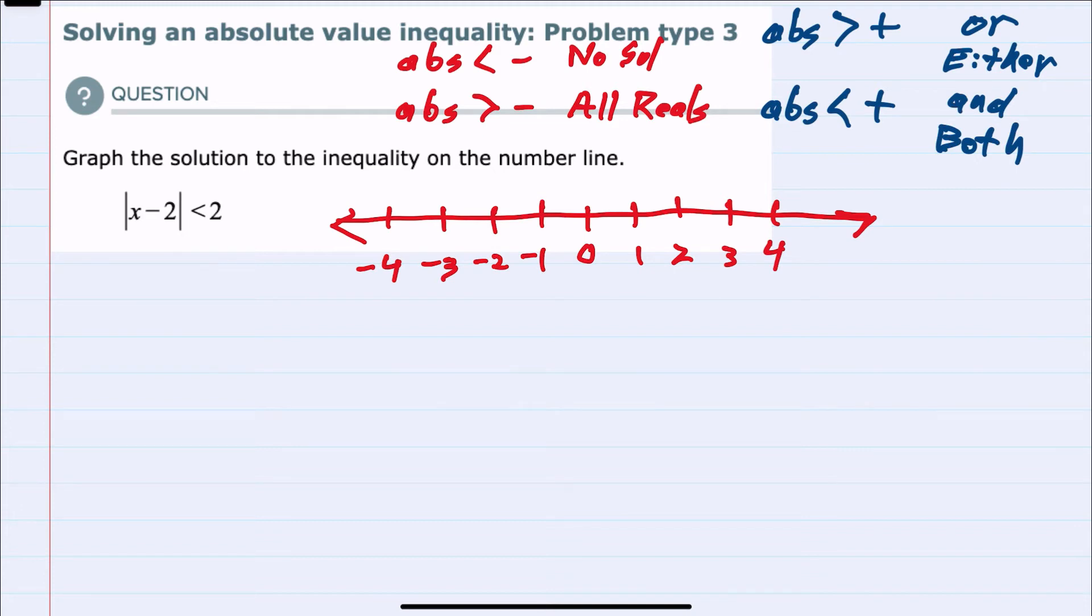That would be an and situation where we would need both solutions to overlap. From this example we can see that we have an absolute value less than a positive, so that's going to be where we need the two solutions to overlap.